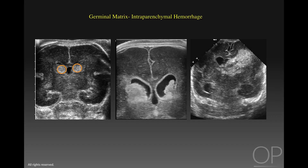These three infants show the typical pattern of premature hemorrhage, extending on the left side from germinal matrix through intraventricular in the center and intraparenchymal peripherally on the right side. These hemorrhages are typically brightly echogenic initially and gradually become liquefied and less echogenic over time.